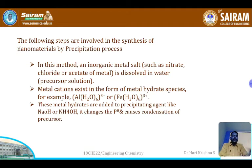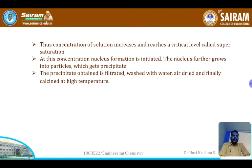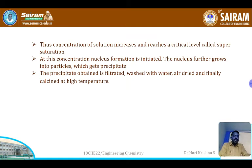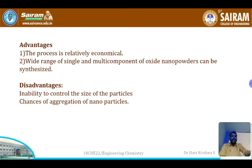As condensation continues, the concentration increases and reaches a critical level, at which point nuclei form. The nucleus grows into particles which get precipitated, similar to crystal formation. This precipitate is then filtered, washed with water, dried, and finally heated to around 800°C (calcination). The thus-obtained precipitate gives fine nanoparticles.